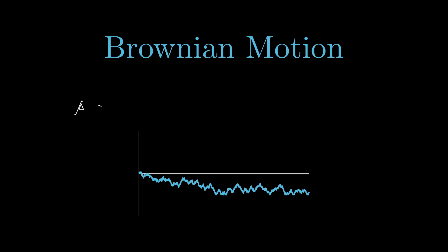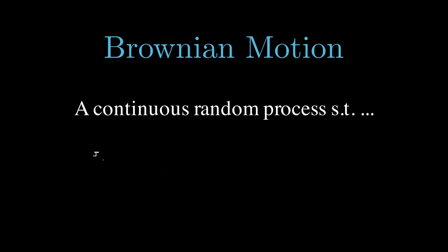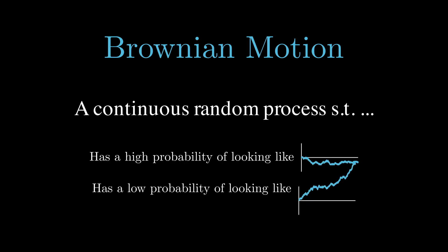I made an entire video describing Brownian motions, let's forget all of that. Let's say that a Brownian motion is some sort of random process that has a high probability of looking kind of straight and having a low probability of going up a single direction.